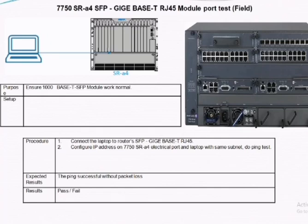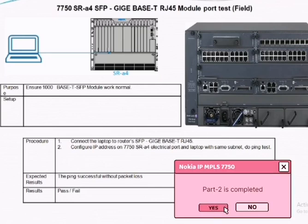The next one is the RJ45 module port test. For this purpose, you need to connect your RJ45 Ethernet cable with your laptop, and after that, we ping that IP address for the 7750. If the ping is successful without packet loss, then the RJ45 module port test gradually becomes pass.